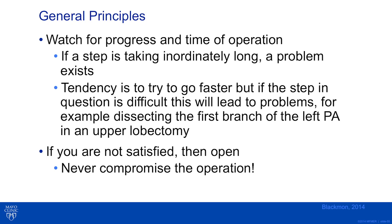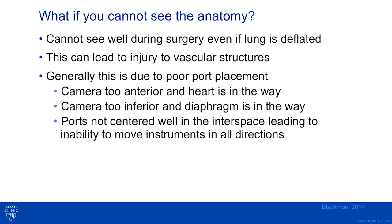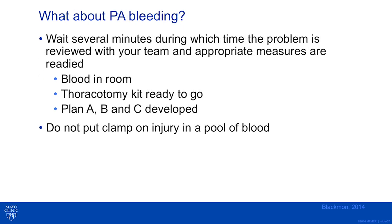What if you cannot see the anatomy? If you cannot see well during surgery even with the lung deflated, this can lead to injury to vascular structures. It is generally due to poor port placement — the camera is too anterior and the heart is in the way, or too inferior and the diaphragm obstructs. Ports cannot be centered well in the intercostal space, leading to inability to move instruments in all directions. Wait several minutes reviewing the problem with your team and readying appropriate measures. Make sure there is blood in the room, a thoracotomy kit is ready, and plans A, B, and C are developed. Do not put a clamp on an injury in a pool of blood.